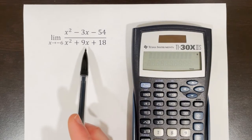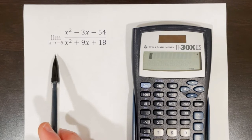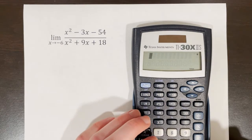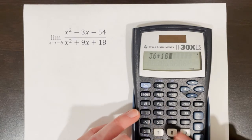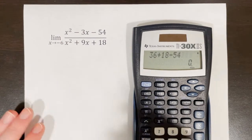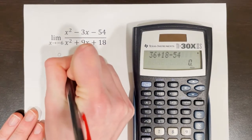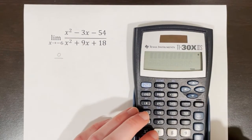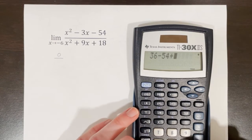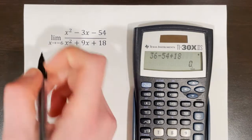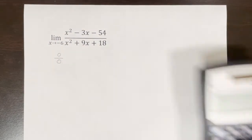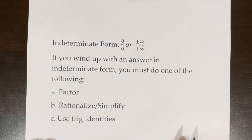We're asked to find the limit of this function as x approaches negative 6. Typically, the most efficient way to find a limit is to use direct substitution. If we try direct substitution here, we get 36 plus 18 minus 54 in the numerator, which is 0, and 36 minus 54 plus 18 in the denominator, which is also 0. This gives us 0 over 0, but that is not the actual answer — this is called indeterminate form.